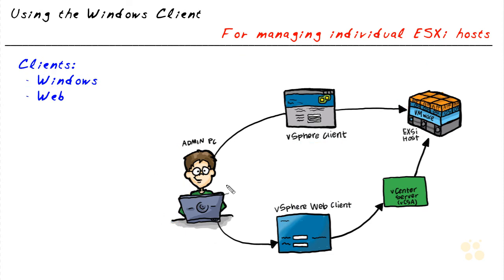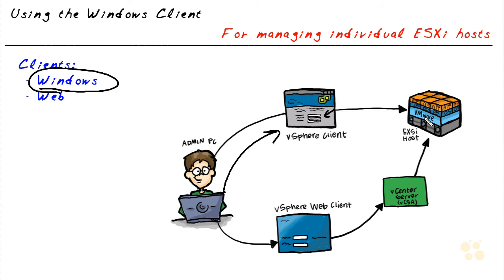At that point, on the admin PC, we would launch the vSphere client — which I like to call the Windows client. In the dialog box, we'd tell it exactly what IP address we want to connect to regarding which ESXi host, put in our username and password, and it would connect to that ESXi host so we could manage it via this vSphere Windows client running on our computer.